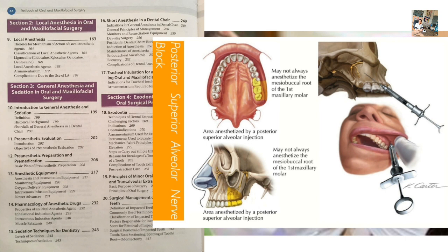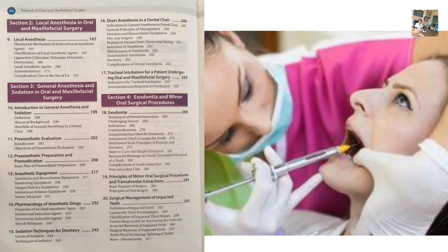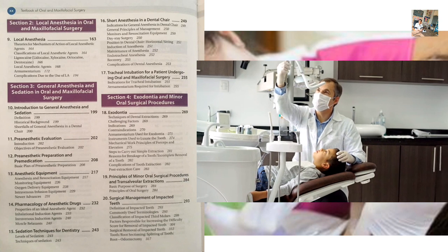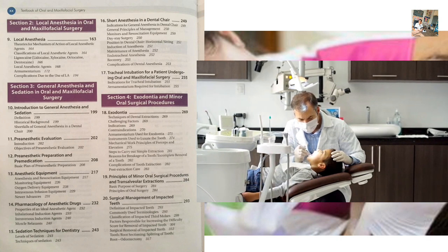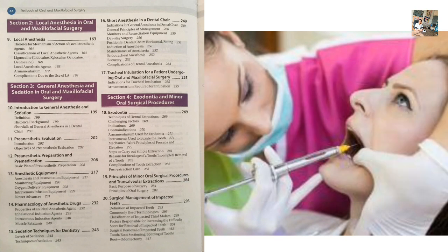Technique: the landmarks are the mucobuccal fold and its convexity, the zygomatic process of the maxilla, the infratemporal surface of the maxilla, and the anterior border and coronoid process of the ramus of the mandible. The needle is passed slowly upward, backward, and inward — this direction is asked in competitive exams. Procedure: give LA over 32 to 60 seconds slowly, then wait 3 to 5 minutes before performing the dental procedure.